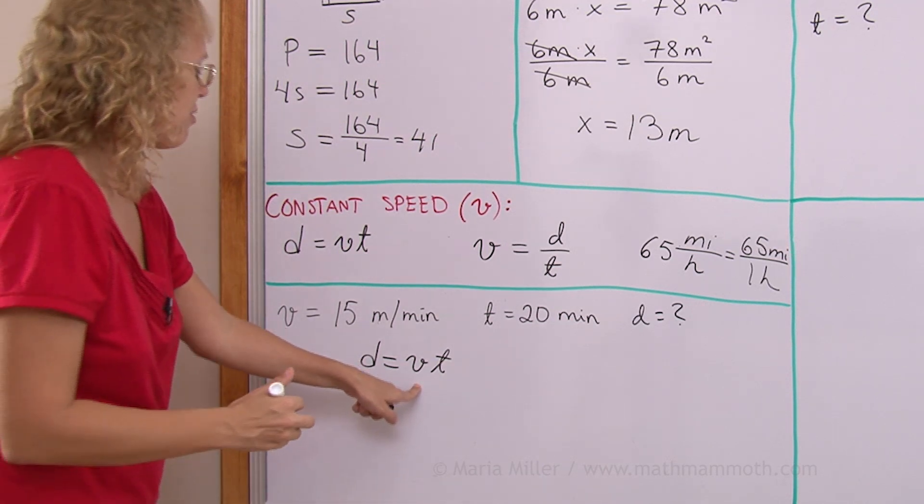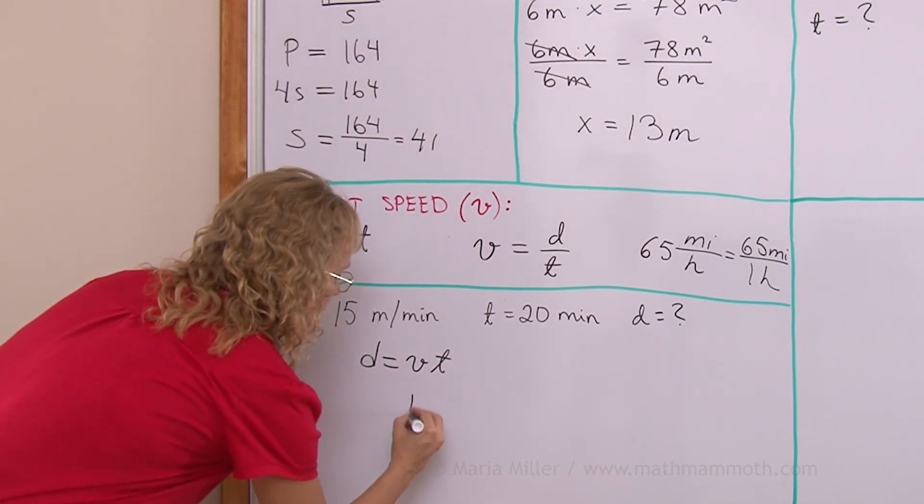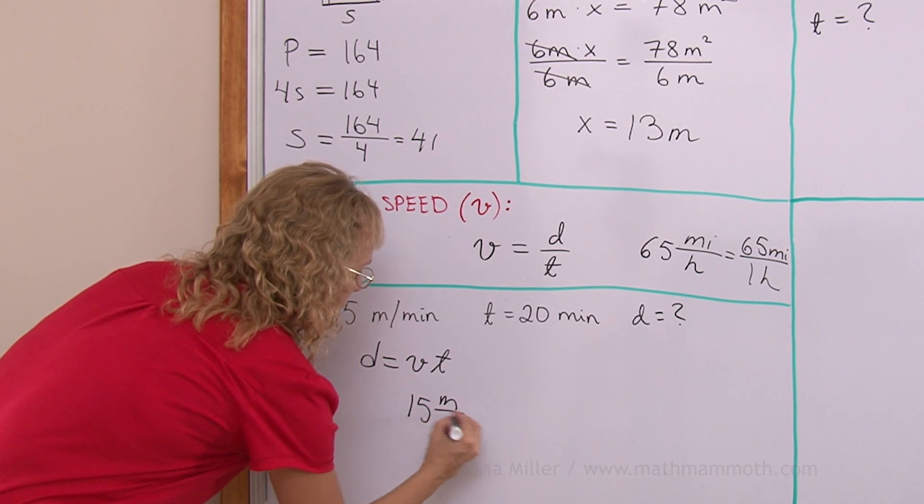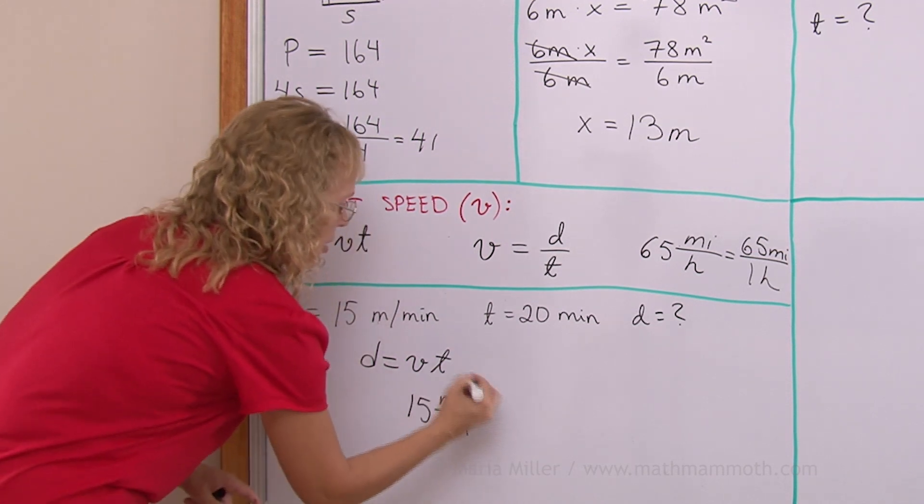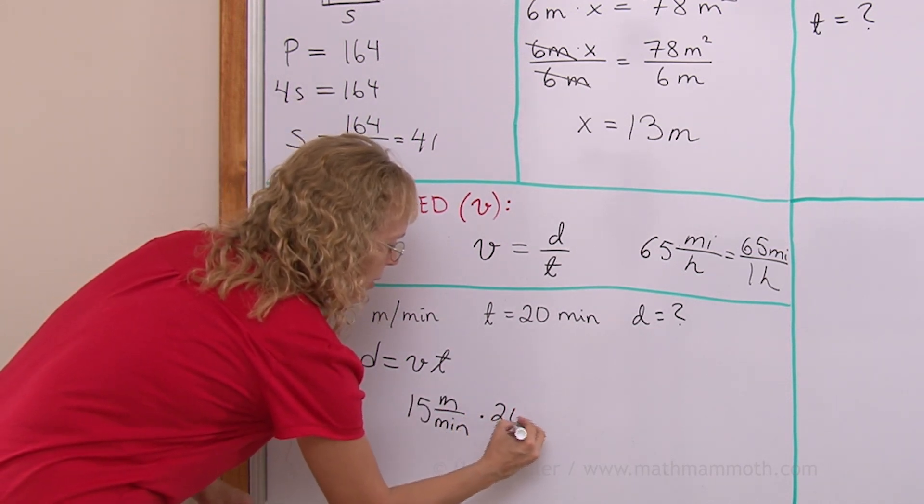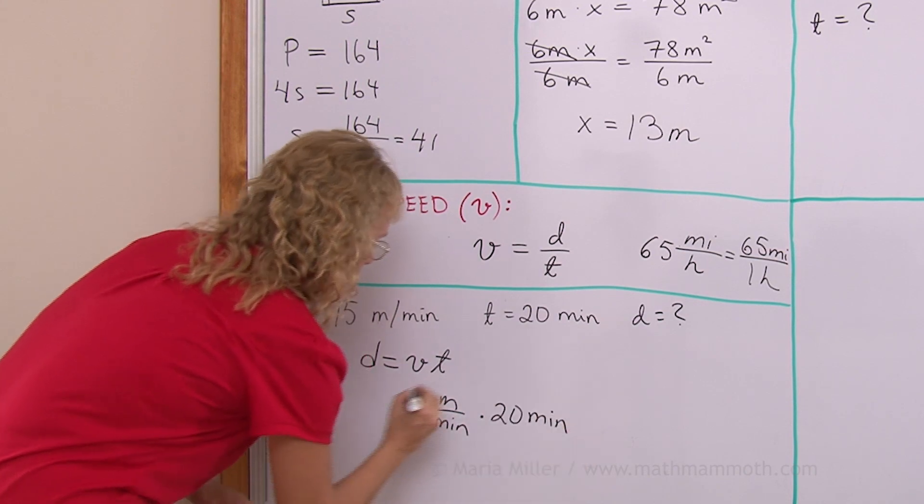So, in place of V, I write this. 15 meters per minute. In place of T, I write 20 minutes. And that's my D.